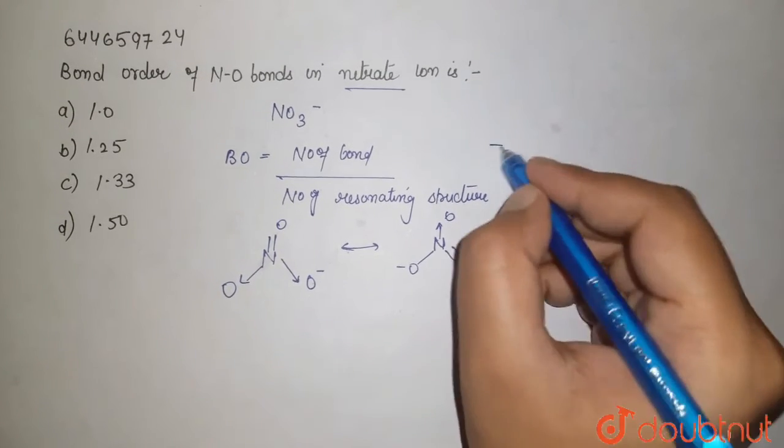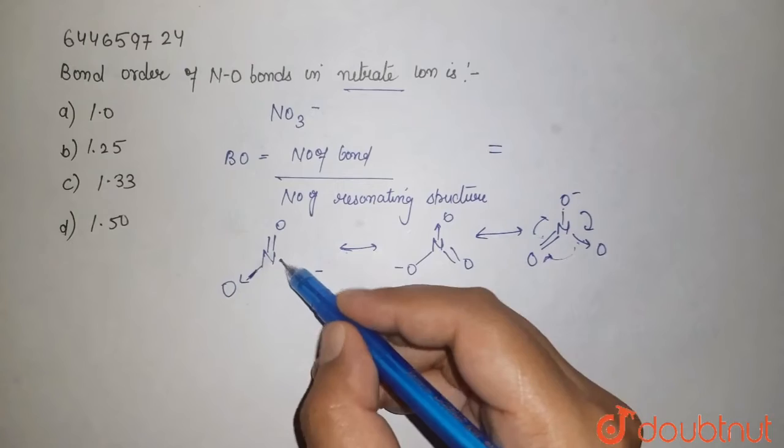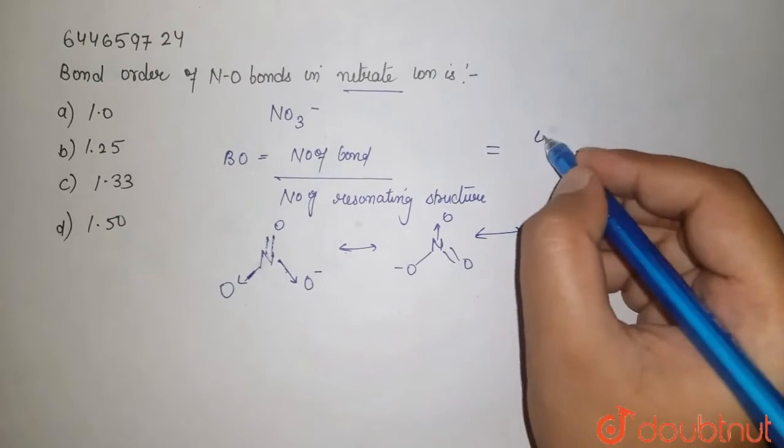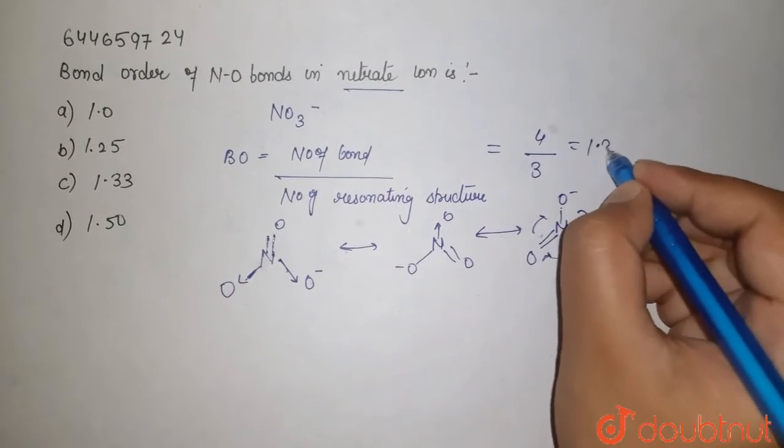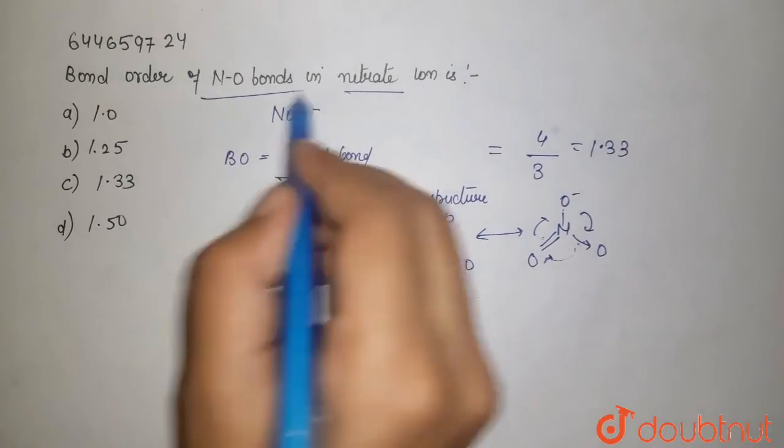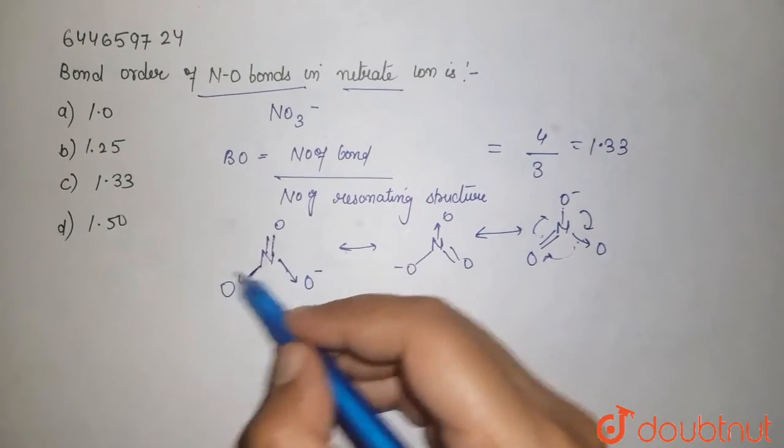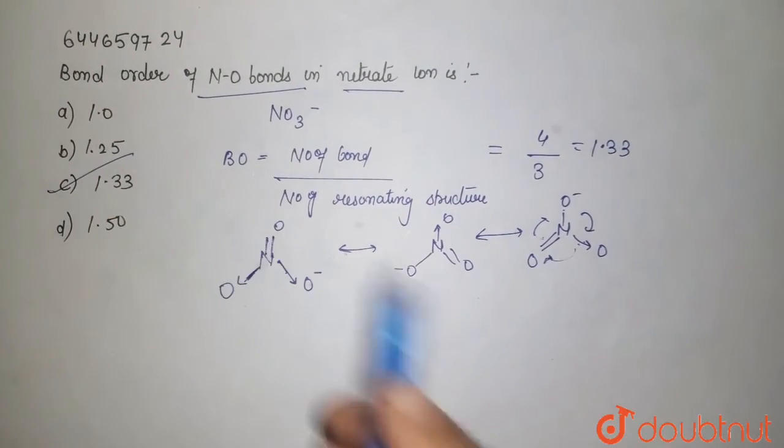So we get to know total number, that is one, two, three. And it is four. So four total number of bonds, resonating structure that is three, which is equal to 1.33. So the NO bonds in the nitrate, that is your NO, that is your 1.33, that is your C option will be the right answer.